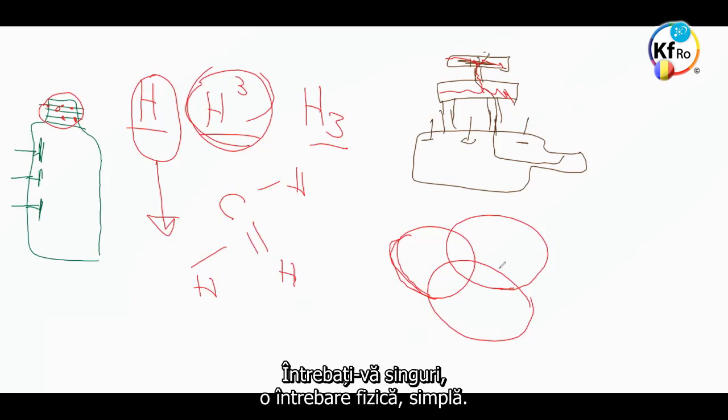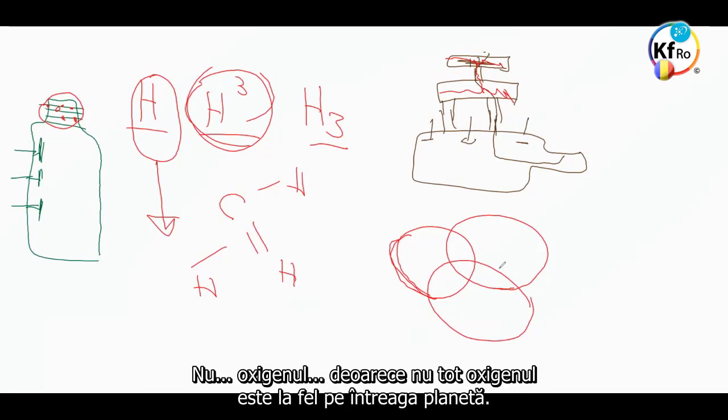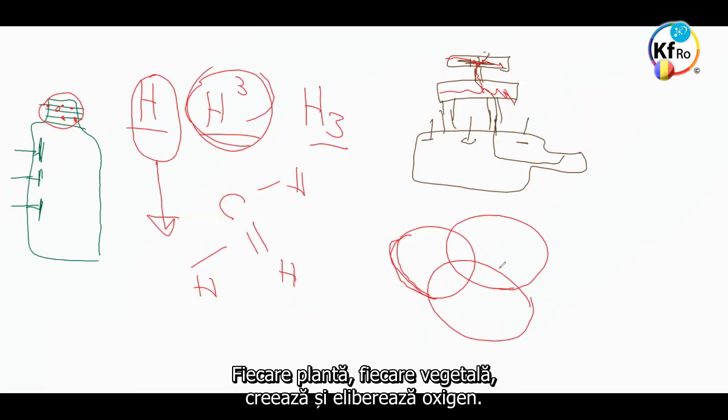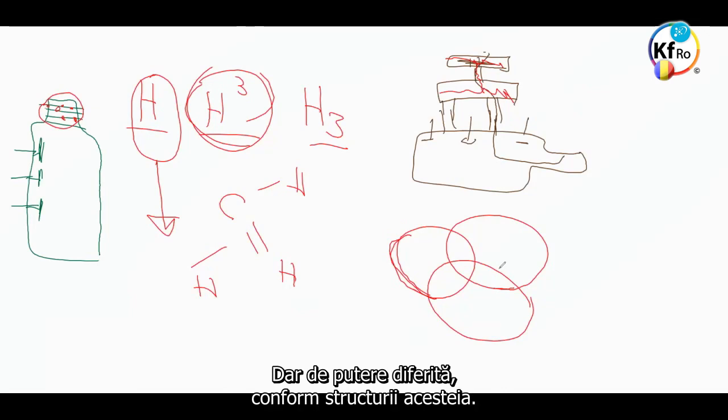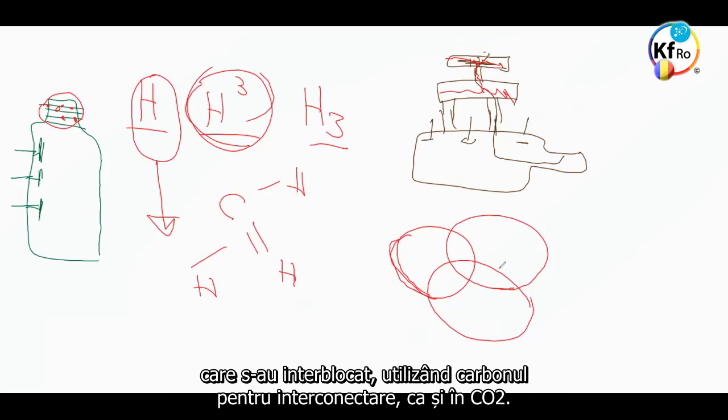Ask yourself a simple physical question. Ask and understand the process of the production of the elements as we have spoken before. Oxygen because it's an Oxygen is not the same across the Planet. Each plant, each vegetation creates and releases an Oxygen of different strength according to its structure, even though we call them all Oxygen. When you have Oxygen like CO2, it means two equal in strength Oxygen have managed to interlock using the Carbon as an inter-connector like CO2.